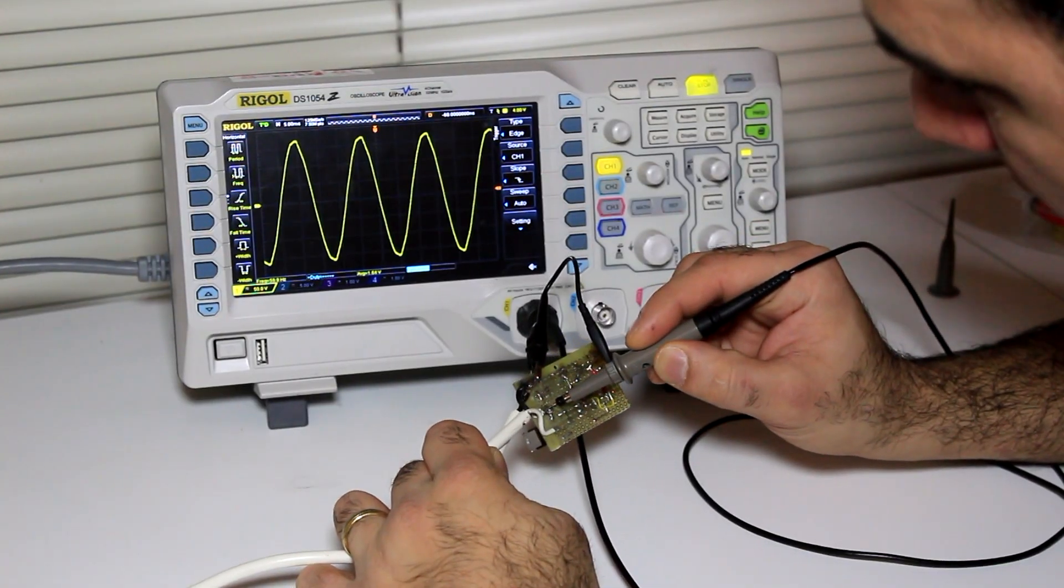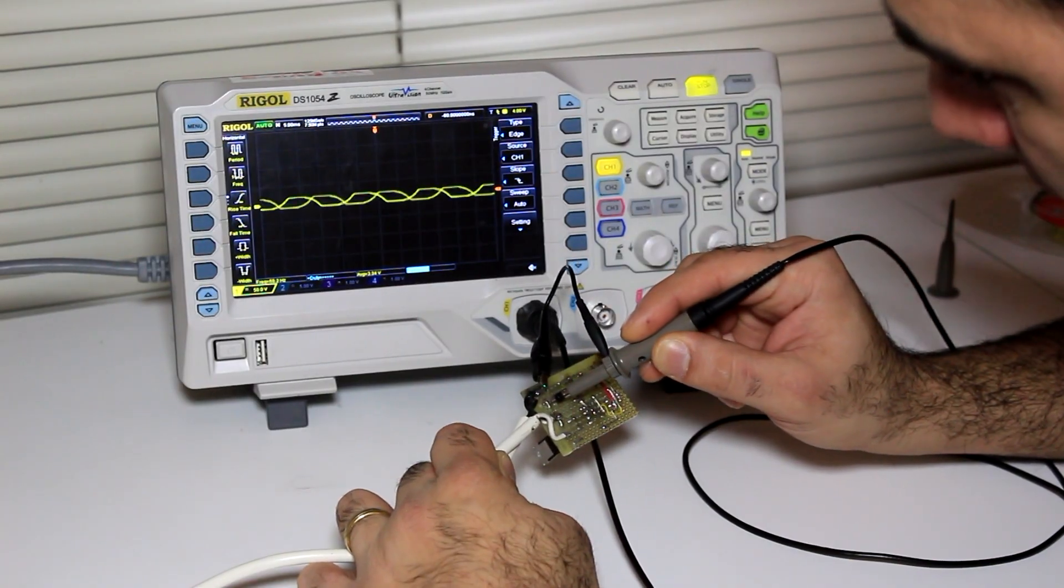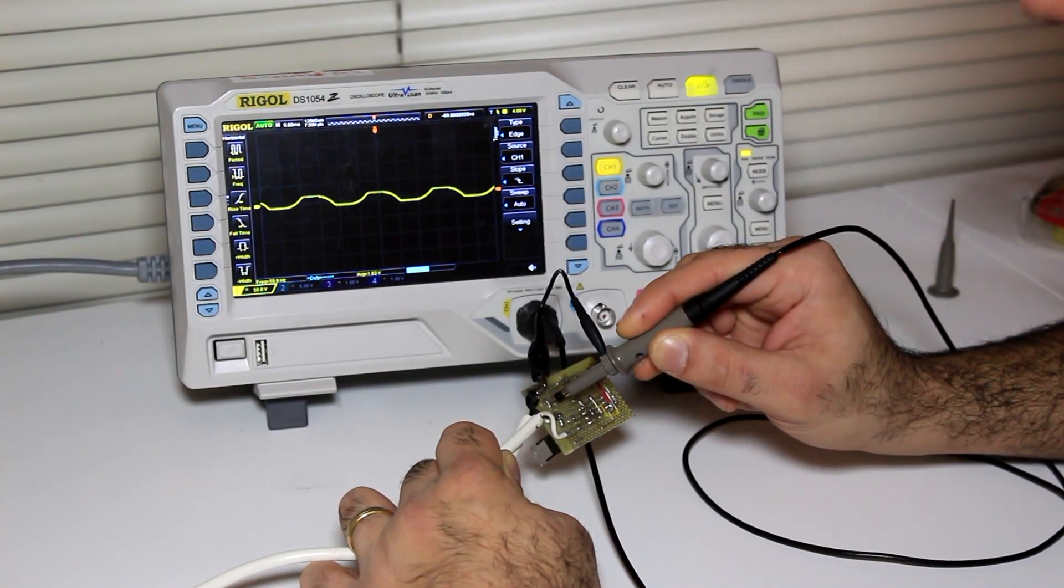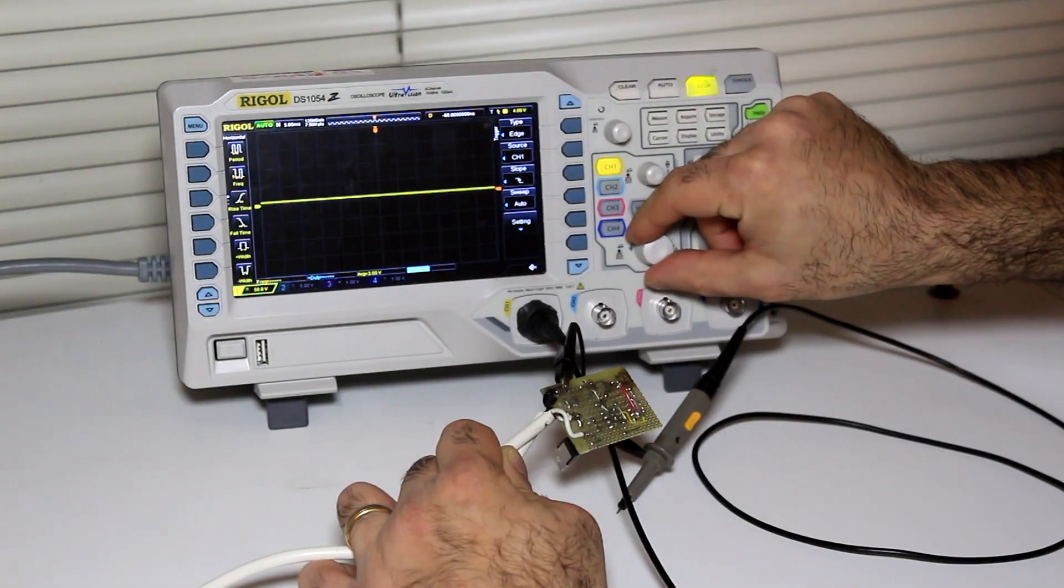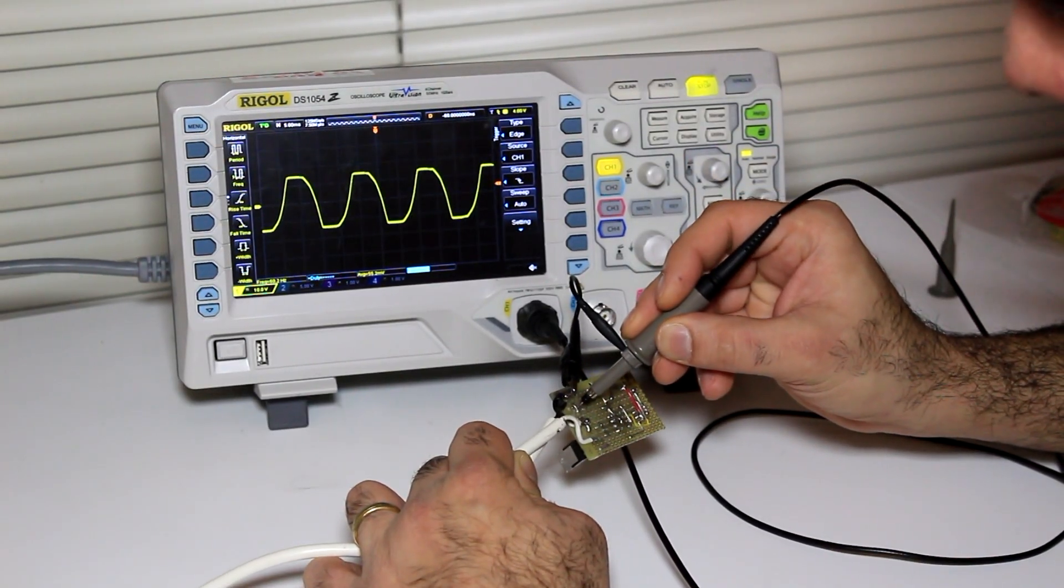Okay, here's the 120 volt AC input to the circuit. And this is the output of the capacitor divider. And as you can see, it's much smaller. Let me zoom in. You also see that it's a little bit deformed because it's loaded by the circuit.